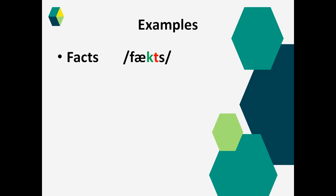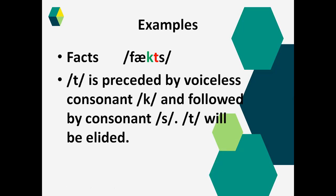Let's see the first example. It's 'facts'. We have three colors: /k/ in green, /t/ in red, and /s/ in black. The /t/ sound is preceded by /k/, which is a voiceless consonant, and after /t/ there is /s/, which is a consonant sound. So the /t/ will be elided, and 'facts' becomes 'faks'. The /t/ sound is completely removed.